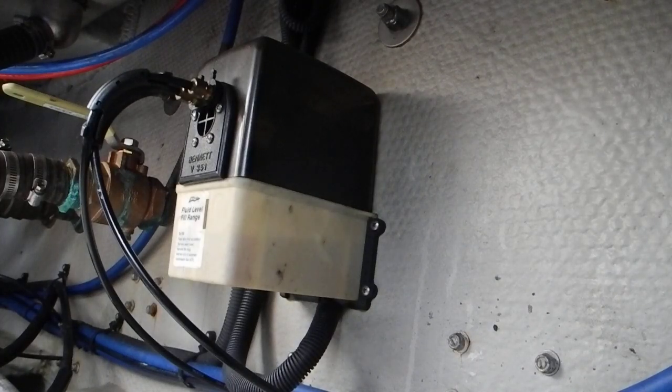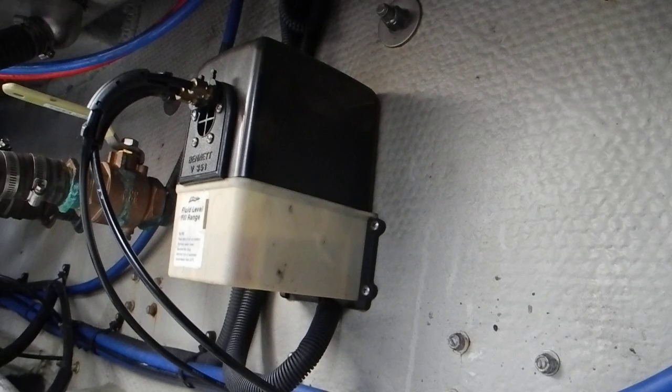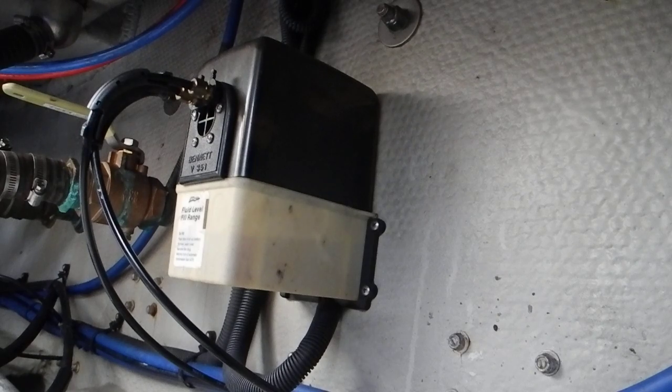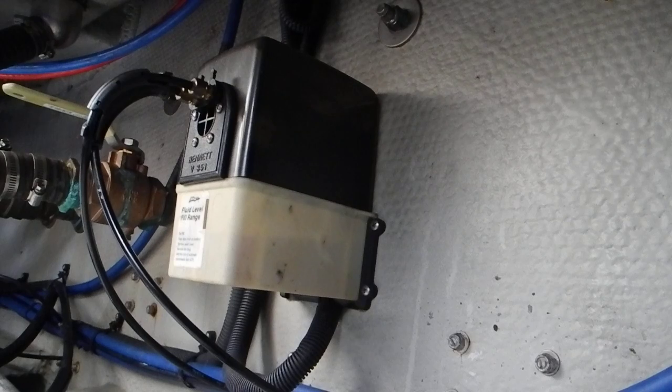Hello, this is Captain Chris. I am in the lazarette on a cruising boat that actually has hydraulic trim tabs. Trim tabs are the tabs on the back of the boat that go up and down to control the bow of the boat up and down.